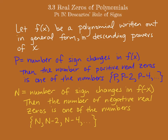Here is Descartes' rule of signs. It looks more overwhelming than it really is, and going through some examples will definitely help. f(x) needs to be written in general form — basically not factored at all, no parentheses — and all terms written in order with exponents descending. We count the number of sign changes in f(x), going from a positive term to a negative term or vice versa. That tells us the number of positive real zeros: either the number of sign changes, or going down by a multiple of two. Then we find f(-x), count sign changes there, and that tells us the number of negative real zeros, or going down by a multiple of two.